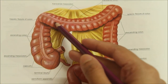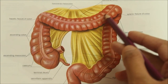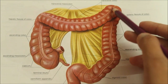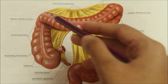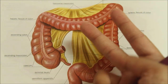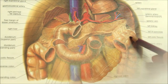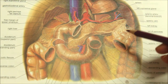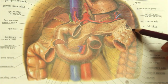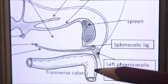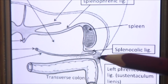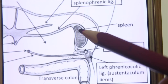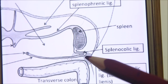Moving on to the transverse colon: it is about 50 cm long and extends across the abdomen from the right colic flexure to the left colic flexure. Anteriorly, it is related to the greater omentum and the anterior abdominal wall. Posteriorly, it is related to the second part of the duodenum, the head of the pancreas, and coils of the small intestine. The left colic flexure, or splenic flexure, lies on the lower part of the left kidney and the diaphragm, behind the stomach and below the anterior end of the spleen. It is attached to the 11th rib by a horizontal fold of peritoneum called the phrenicocolic ligament, which supports the spleen and forms a partial upper limit of the left paracolic gutter.